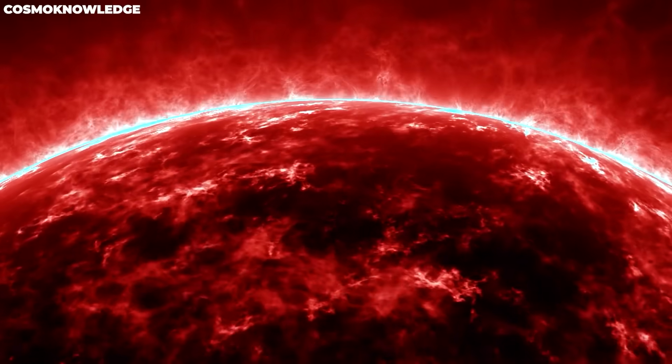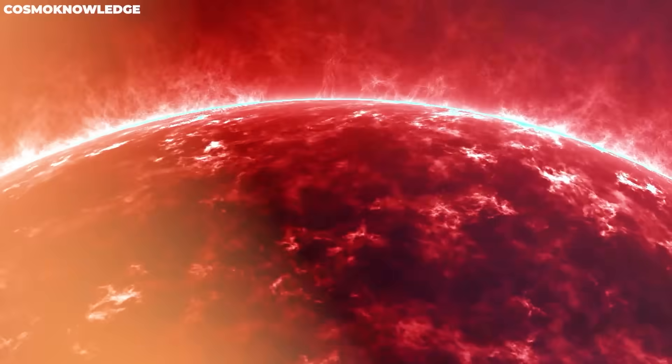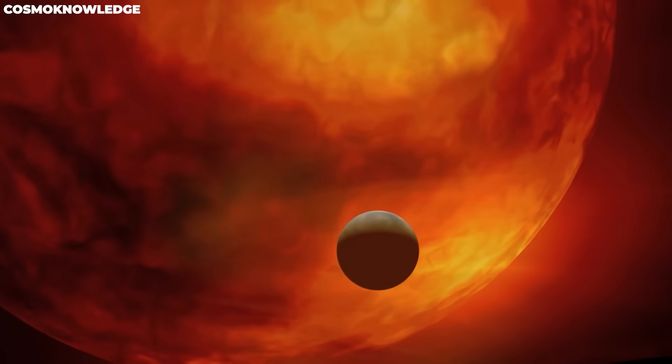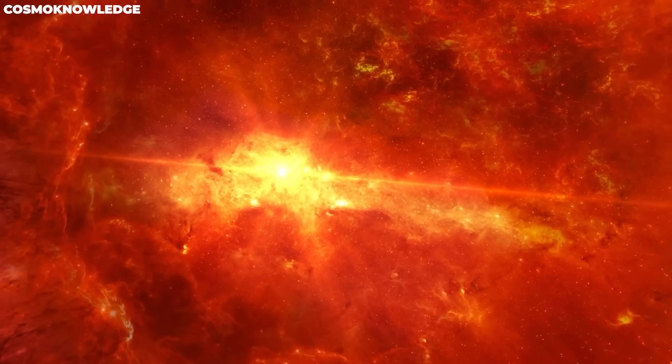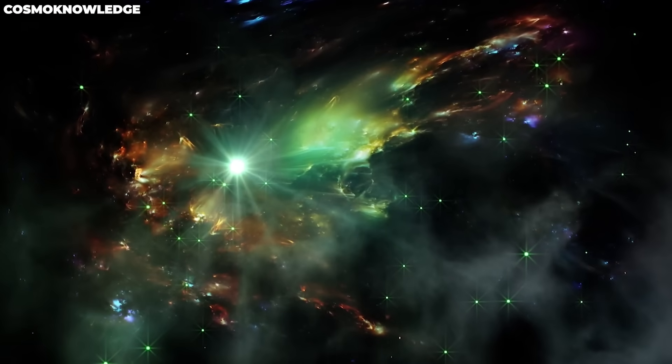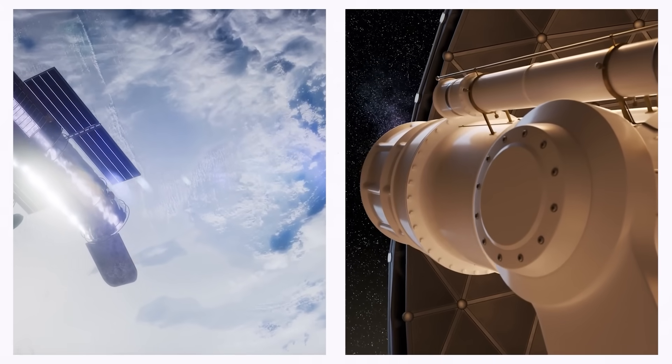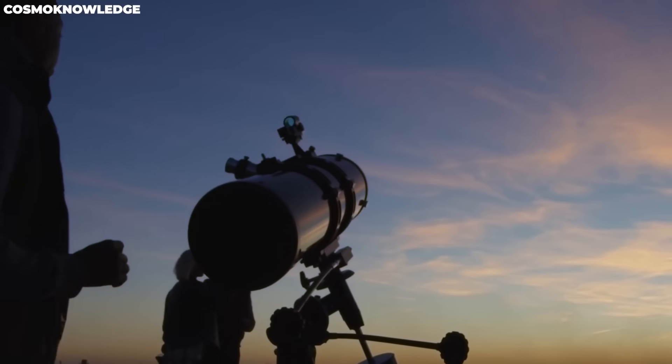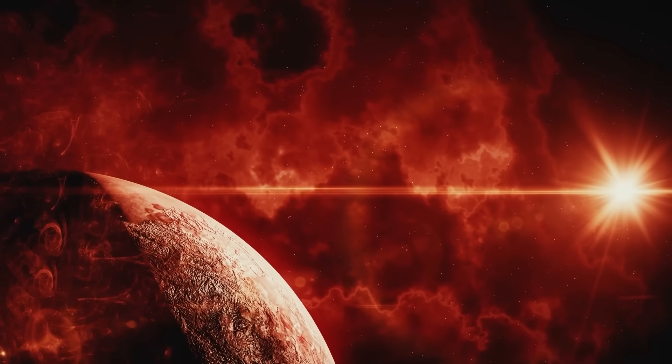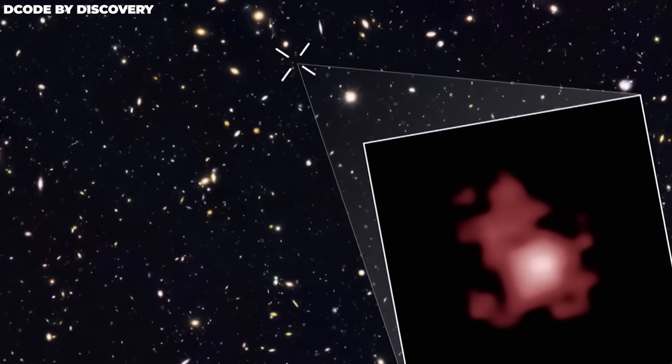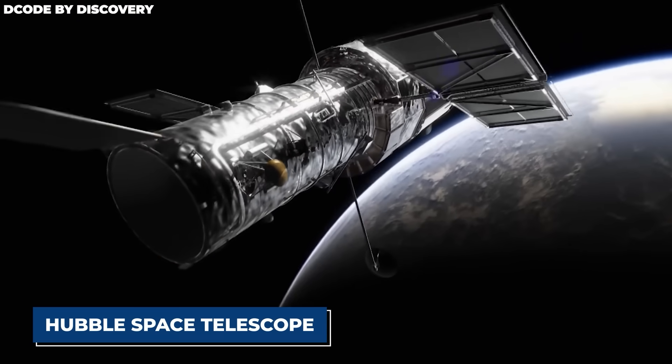Actually, the fact that Betelgeuse is a red supergiant already proved that it is almost done with its life as a star. A star that is dying will also usually dim over time, which is something that scientists agree on. Even so, Betelgeuse's recent strange behavior made scientists even more worried, and many telescopes are now studying the star.